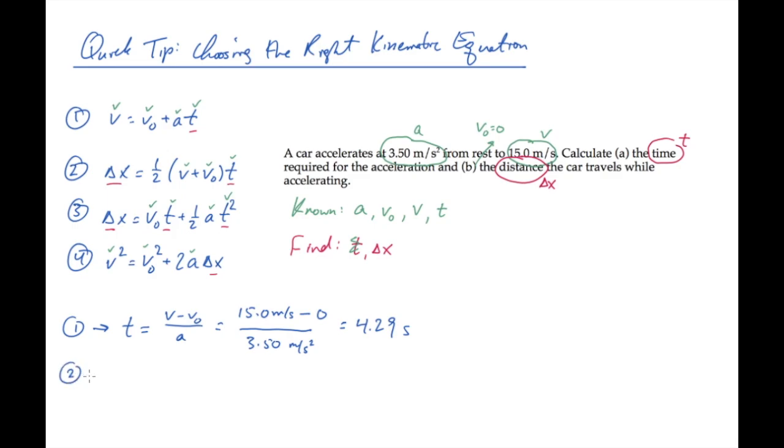If you look at equation two, you see that now delta x is the only unknown in that equation, so we can use that one. Equation three also has only one unknown, delta x, and so does equation four. Delta x is the only unknown in equations two, three, and four, so we can use any of them, and I'll show you here how they each work.